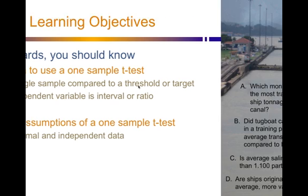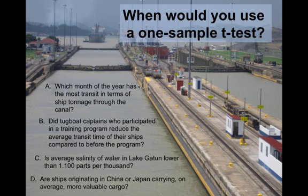Back to our questions here. Which one would you use a one-sample t-test? Well, in A, which month of the year? Well, in that case we have 12 samples, so that's not a one-sample t-test. B, did tugboat captains who participated in a program reduce their transit time compared to before the program? Well, in this case your two samples are before and after, so you have two samples.